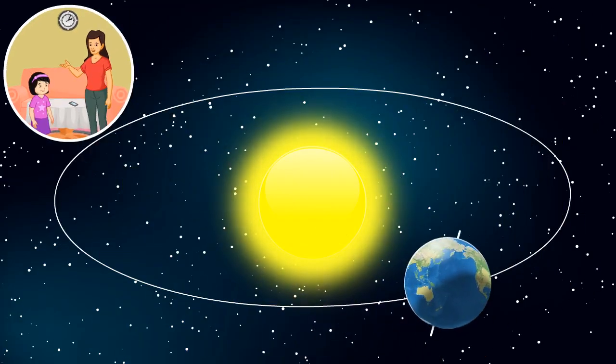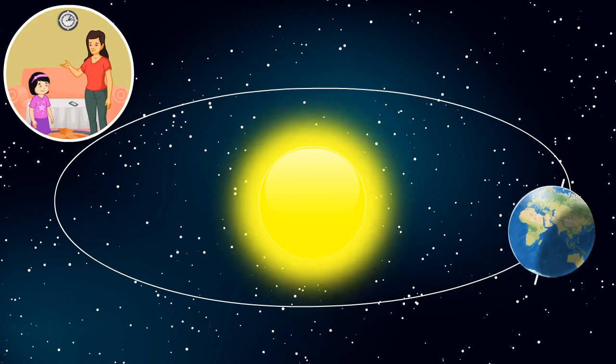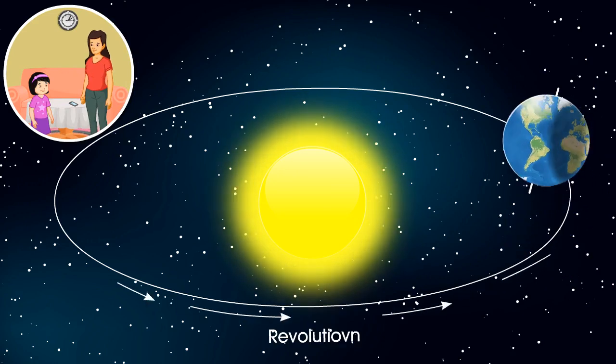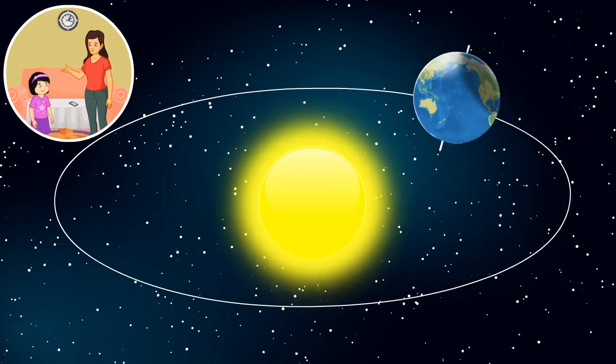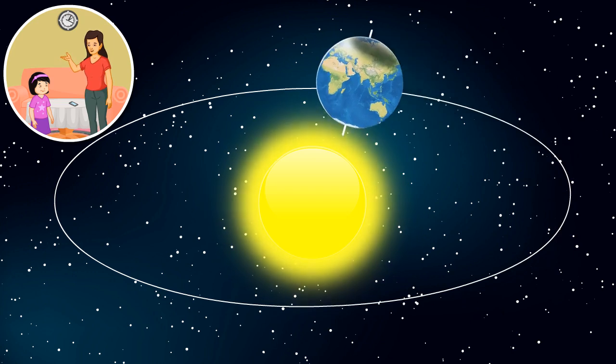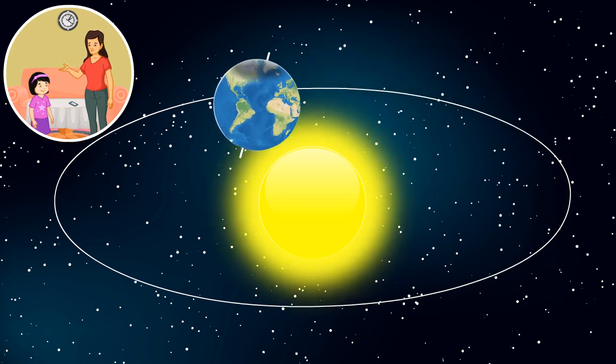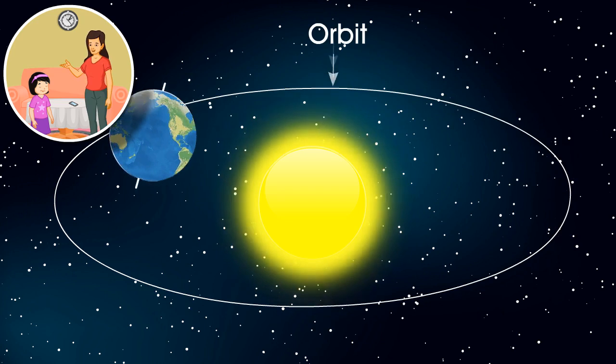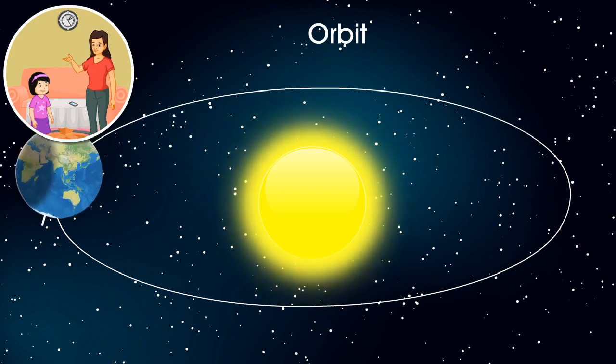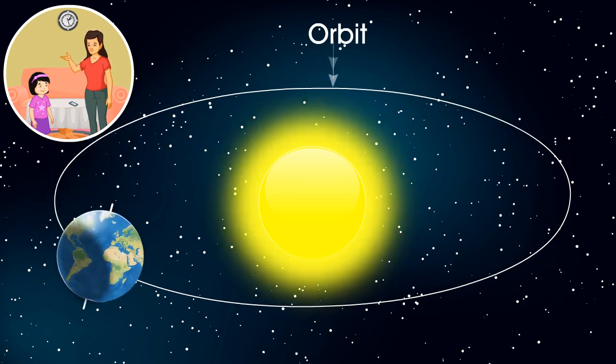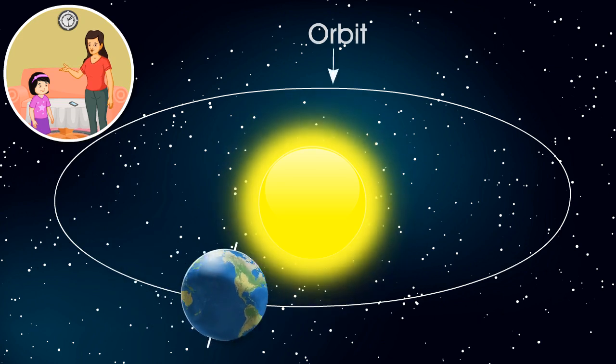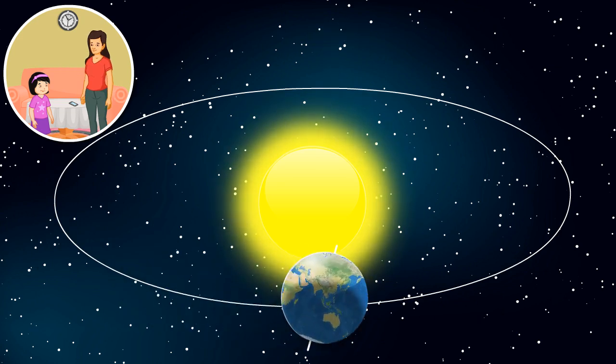Besides rotation, there is another motion of the Earth called revolution. Revolution is the movement of the Earth around the Sun following a fixed path called the orbit. The Earth takes 365 days or one year to complete one revolution around the Sun.